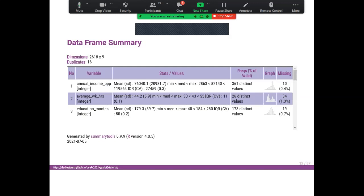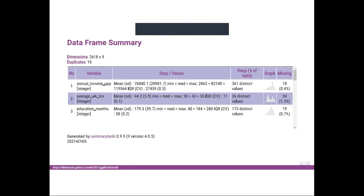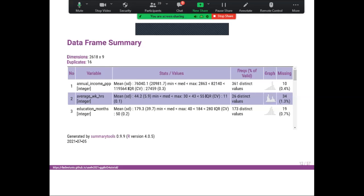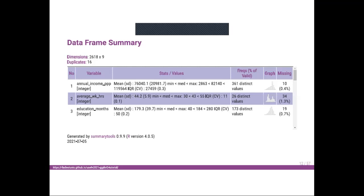Let's move to the data frame summary. Before starting to visualize our data, we do a summary to know about basic statistics. For example, for the variable annual income, we have the mean, min, max, and median, and also the frequency of valid data — about 361 distinct values. We are also shown missing values: about 10 missing values, representing 0.4% of the data. This summary is generated by the summarytools package.